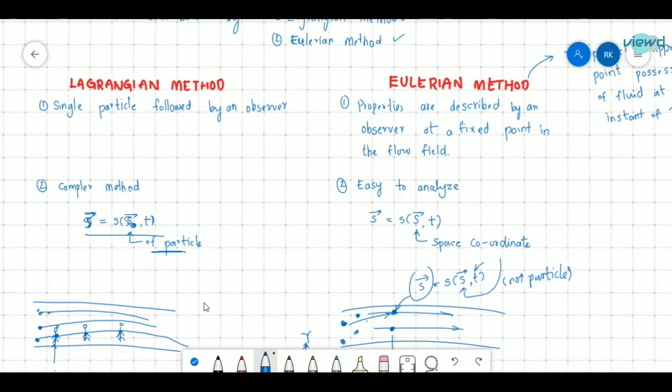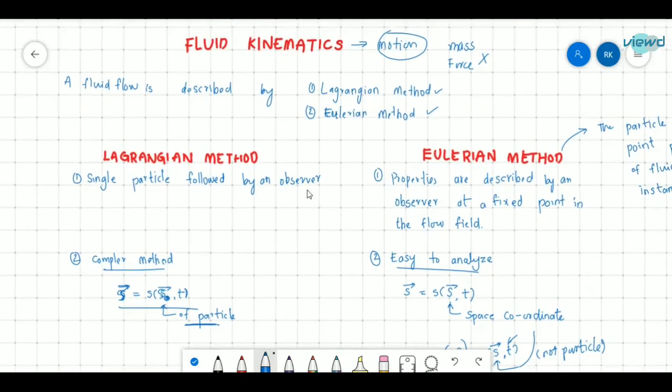So if we compare the complexities of Lagrangian and Eulerian, it seems like Lagrangian method is quite difficult. So this is a complex method and this one is easy to analyze. So we use the Eulerian approach. We use Eulerian method to analyze fluid kinematics. So this is the difference between Lagrangian and Eulerian method.